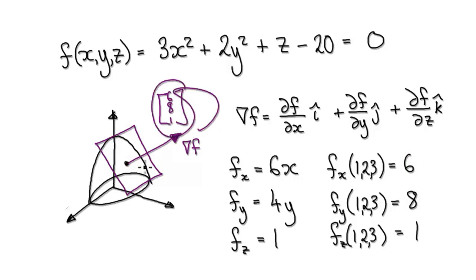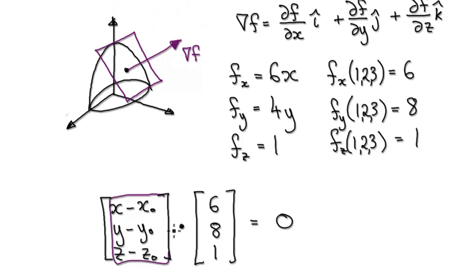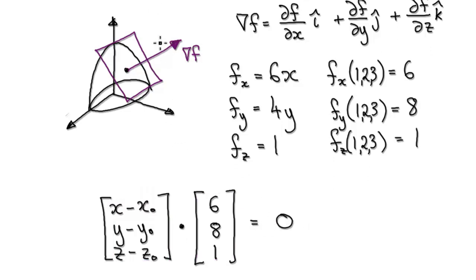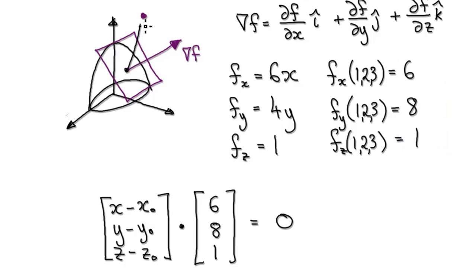From the gradient vector, we can work out the equation of the plane. To describe this plane, we need to demand that the dot product of a vector in the plane and our gradient vector equals 0. So when you get to this stage, you know that this describes the vector from the fixed point to a general point.